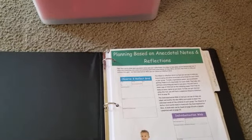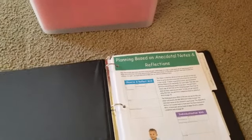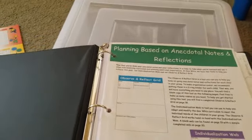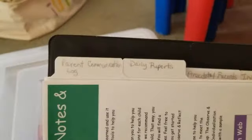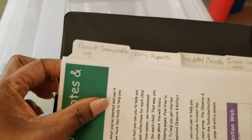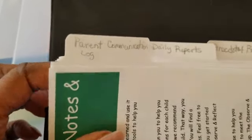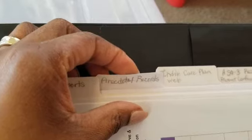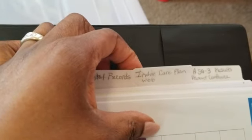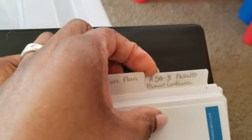Documenting all of this, I keep a planning binder based on anecdotal notes and reflections. This becomes very important because it goes with the child once they leave me. I keep all their folders in a bin. I section off my binder into the parent communication log, the daily reports, anecdotal records, individual care plan, web, and then my ASQ-3 results.